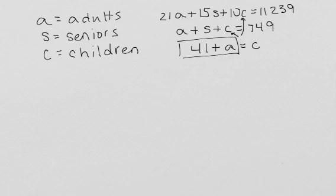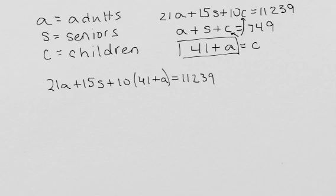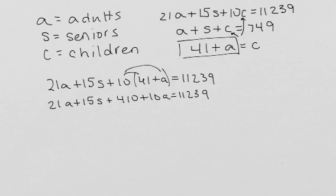So that would give us 21A plus 15S plus 10 times 41 plus A equals 11,239. So we need to distribute this 10, 21A plus 15S plus 410 plus 10A equals 11,239. Combine the 21A and the 10A and subtract 410 on each side. And 15S plus 31A equals 10,829.